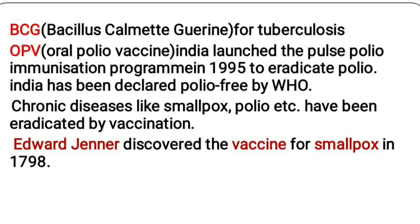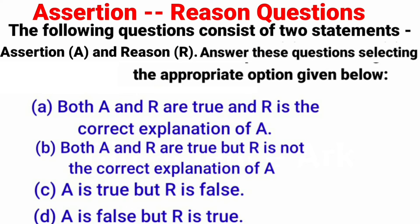Many vaccines are available for preventing infectious diseases. Some examples: BCG (Bacillus Calmette-Guérin) for tuberculosis, Hepatitis vaccine for Hepatitis B, OPV (Oral Polio Vaccine) for polio, DPT for diphtheria, pertussis, and tetanus. These vaccines are available under the child immunization program for preventing infectious diseases.